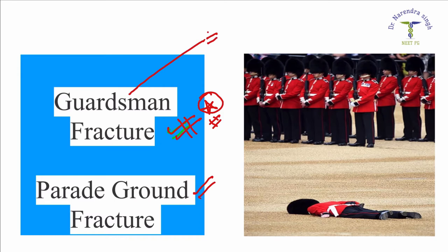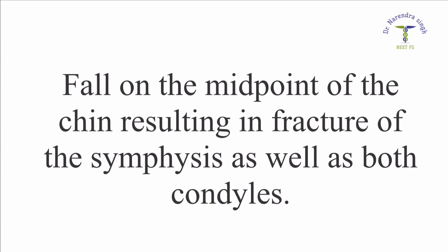The Guardsman associated with this fracture is the British Guard who has to stand for a long period of time on duty for the Queen. Due to prolonged immobility causing decreased venous return and accumulation of blood in the calf region, there used to be fainting episodes. The guard would fall flat on the ground with the impact on the chin, leading to this fracture — and since guards were usually on the parade ground, it is also known as the Parade Ground fracture.